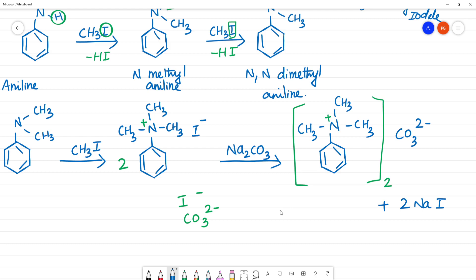Na2CO3, that's why we put this whole structure twice. We put CO3. Here we have plus charge. Here we have 2 plus charge and 2 minus charge.